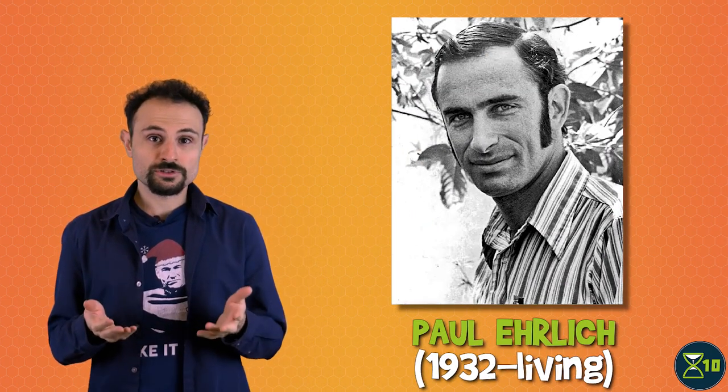In more modern times, biologist Paul Ehrlich took overpopulation concerns several steps further. In his 1968 book The Population Bomb, he predicted that hundreds of millions of people would starve to death in the 70s, and that the dire consequences of overpopulation could at best be mitigated, but not fully prevented. That didn't happen, but it is true that some human activities have negative consequences on the planet, and this may well endanger our own survival.